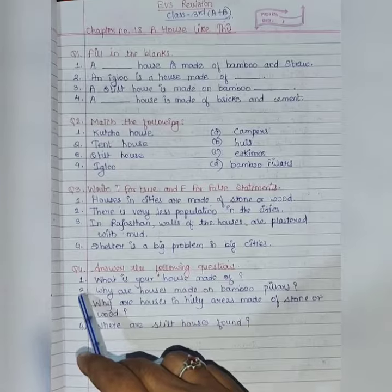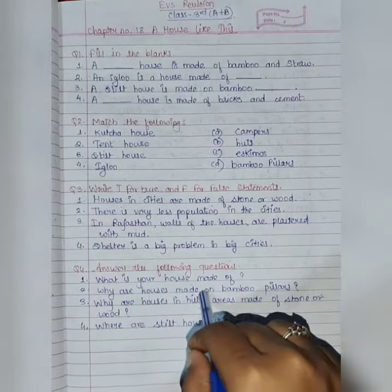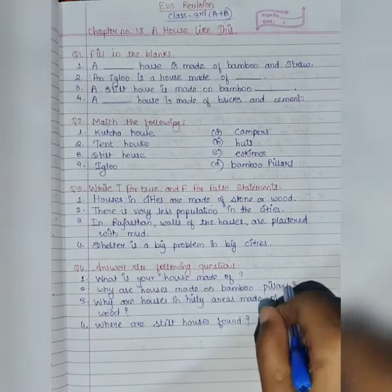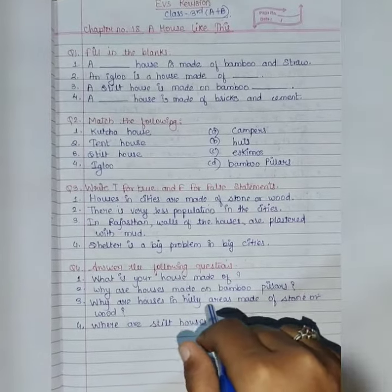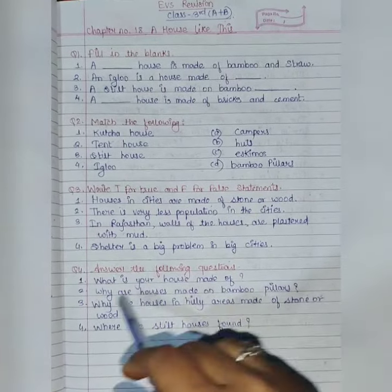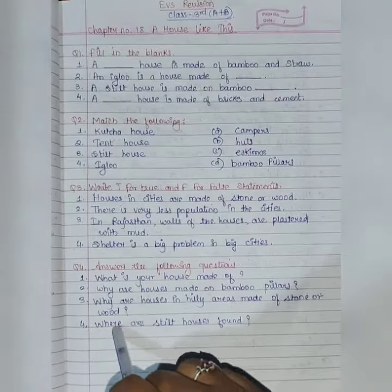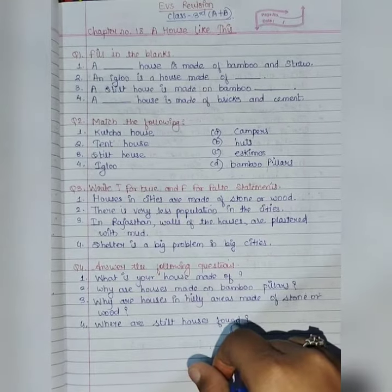Question number two: why are houses made on bamboo pillars? Third: why are houses in hilly areas made of stones or wood? Fourth: where are stilt houses found?